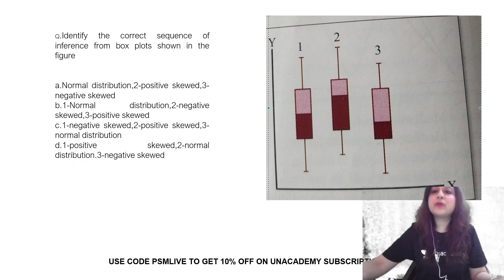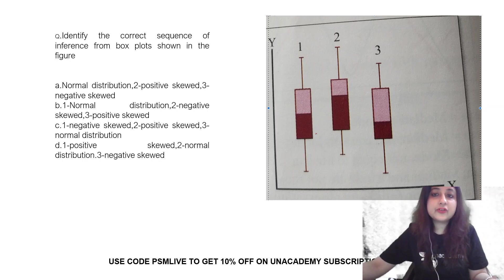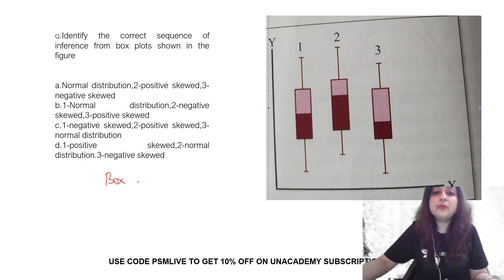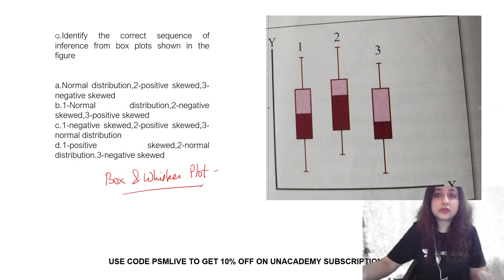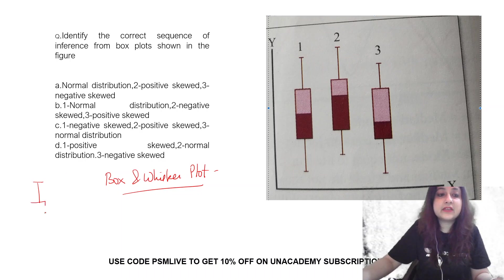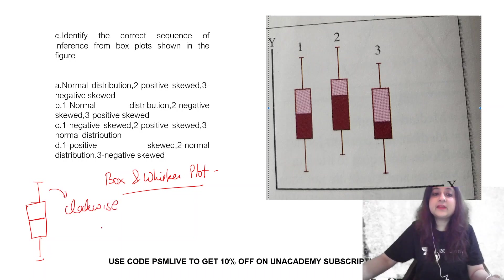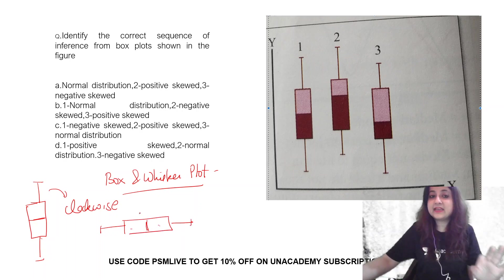Coming to the next one — look at this graph. What can you identify from this? These are box and whisker plots. When you are given a box and whisker plot, they represent quartiles. If you look at the first image, it is equally distributed — if you rotate it clockwise, you will see that 50% of observations are towards the right and 50% to the left. So this is a normal distribution.